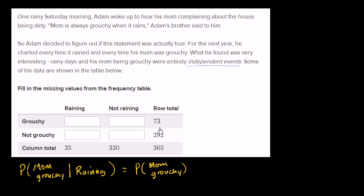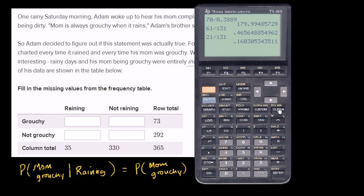So the probability that mom is grouchy in general is going to be 73 divided by 365.